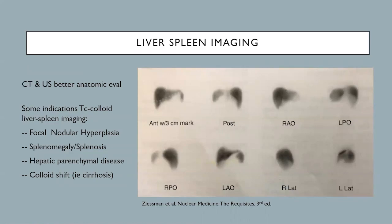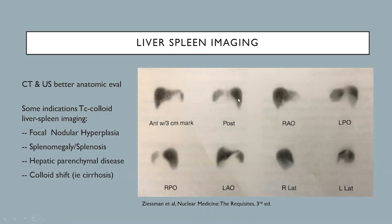Moving on to liver spleen imaging. The liver and spleen are better characterized anatomically using CT and ultrasound, but there are some indications for sulfacolloid liver spleen imaging, including focal nodular hyperplasia, splenomegaly, splenosis, hepatic parenchymal disease, and colloid shift. This study takes advantage of the RES system where sulfacolloid is taken up by cells — for example, by Kupffer cells of the liver — producing activity primarily in the liver, then the spleen, then a little in the bone marrow.